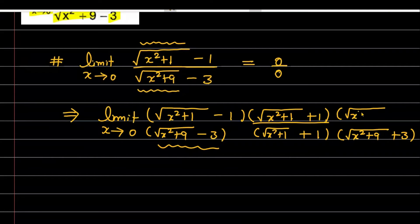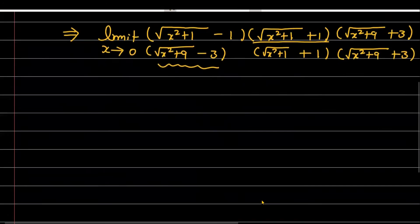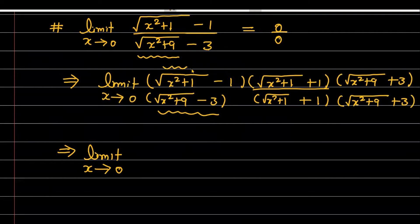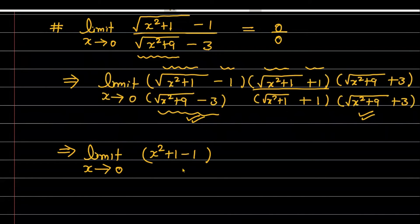Balance करने के लिए denominator में जो multiply किया है वही numerator में भी multiply करना पड़ेगा। अब अगली step में move करते हैं। यह बनेगा limit x approaching 0। यहाँ पे यह a minus b और a plus b का form है, तो x² + 1 minus 1 मिलेगा numerator में। Similarly denominator में x² + 9 minus 9 मिलेगा।